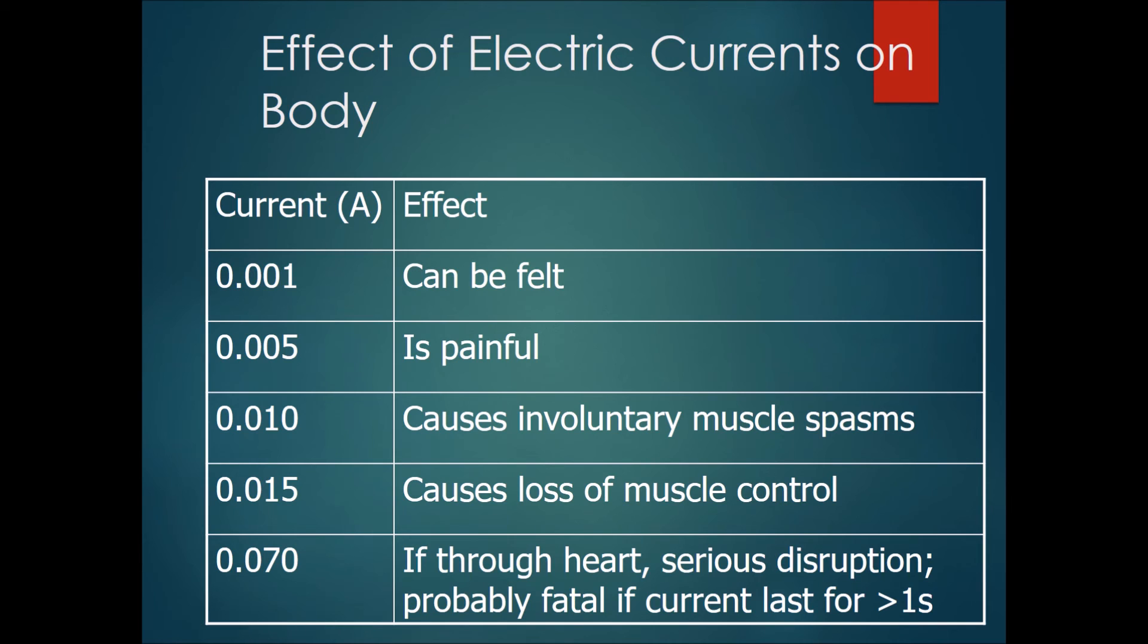Now let's talk about the effect of electric currents on the body. All of you have heard of electrocution, but what current would actually electrocute a person? 0.001 amperes can be felt, 0.005 amperes is painful, 0.01 amperes causes involuntary muscle spasms, and 0.015 amperes is already able to cause loss of muscle control.